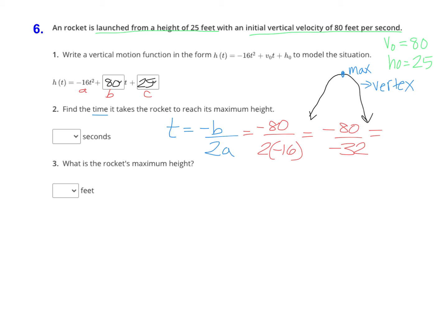We want an exact answer here. Negative 80 divided by negative 32 is exactly 2.5. That means the max height occurs after two and a half seconds, or two and a half seconds after the rocket was launched.